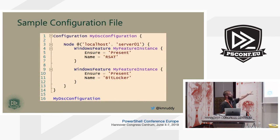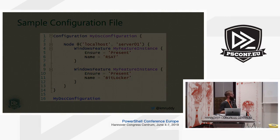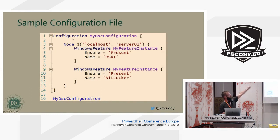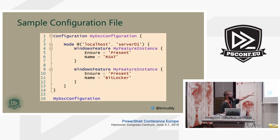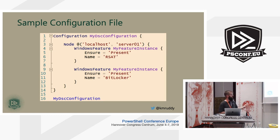Here's an example configuration file. We name our configuration 'MyDSCConfiguration', list out our nodes — in this case we're saying the configuration will be applied against localhost as well as server01. Within that we want two services to be present, installed, and enabled: RSAT and BitLocker. At the bottom is where compilation happens so it can create the MOF files.